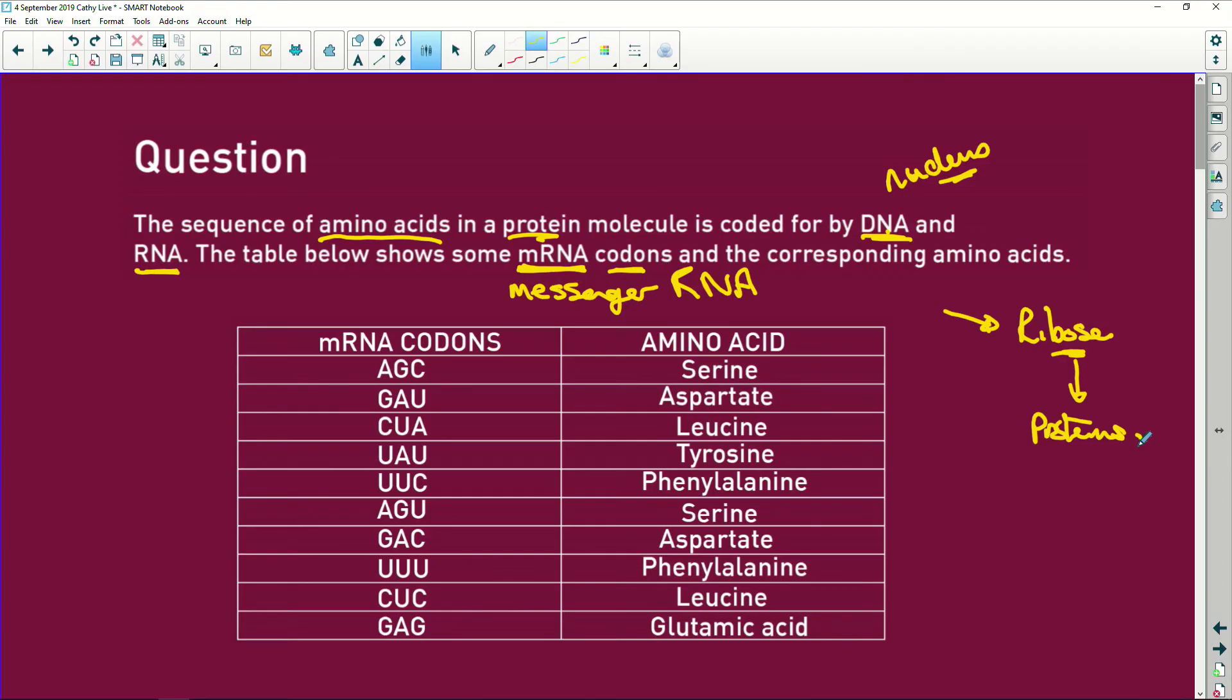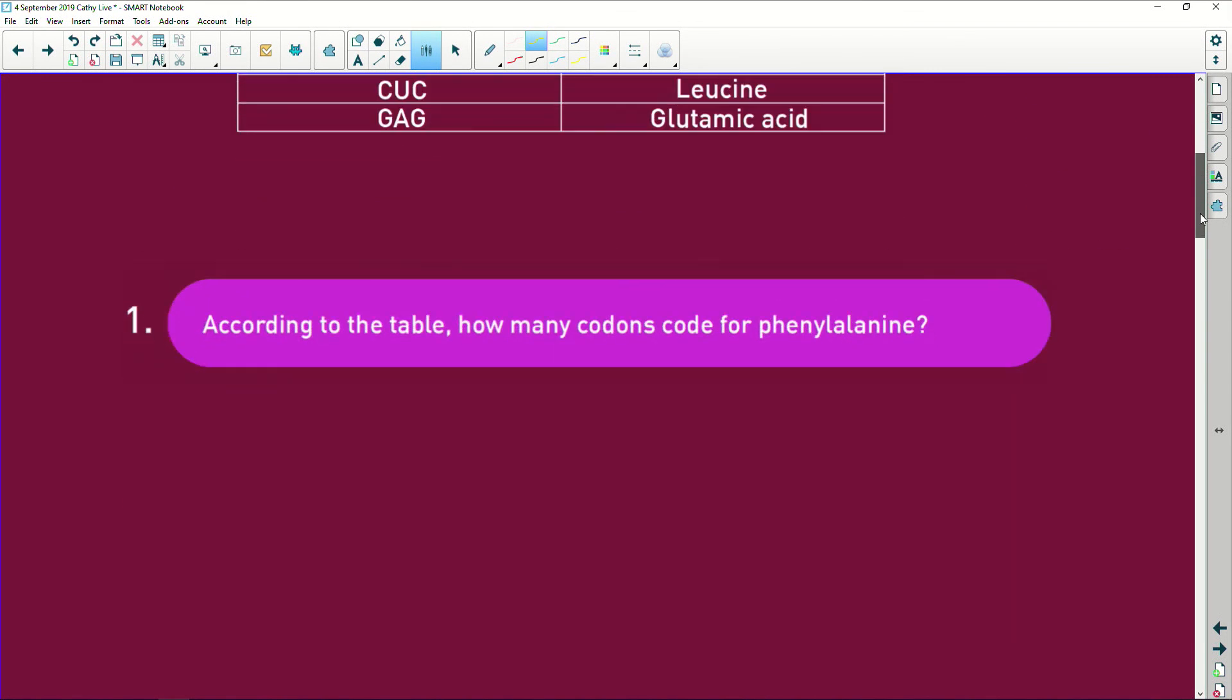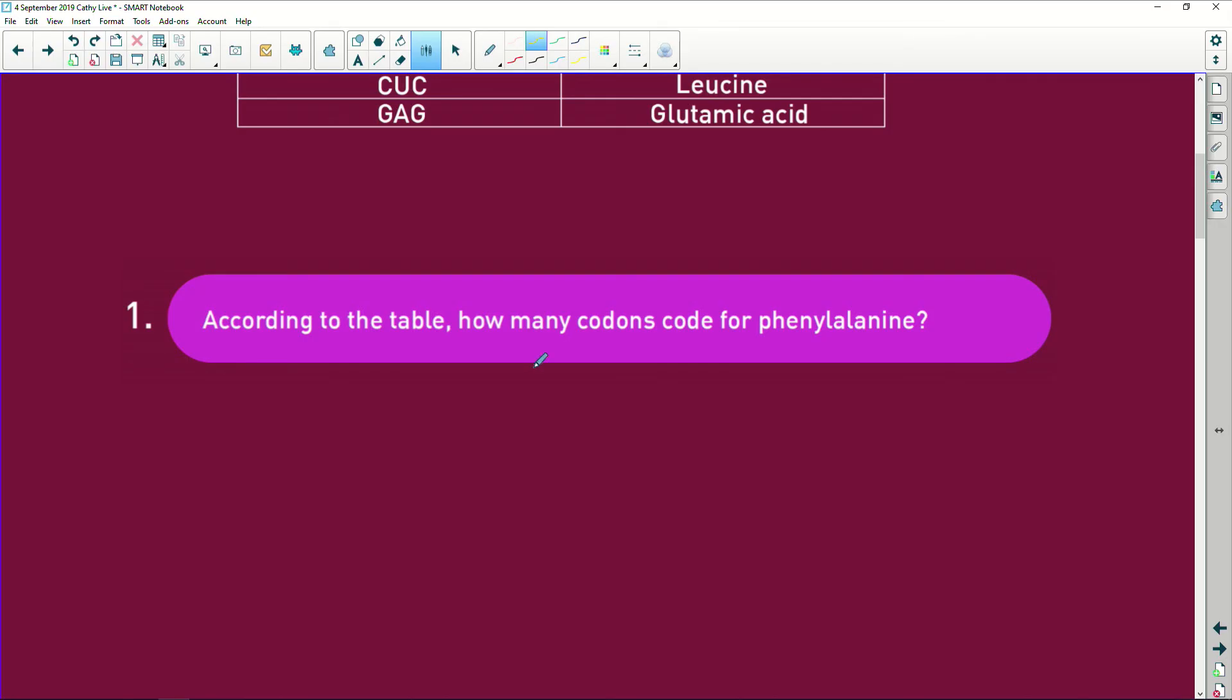What they've given you here is a whole bunch of mRNA codons and the amino acids that they will code for. So according to the table, how many codons code for phenylalanine? It sounds like someone's very pretty name, phenylalanine.